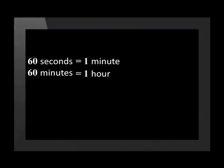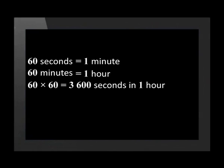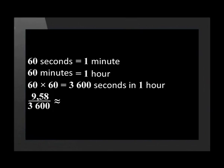Now let's convert 9.58 seconds to hours. There are 60 seconds in a minute and 60 minutes in an hour, which means there are 3600 seconds in an hour. To convert 9.58 seconds into hours, we must divide by 3600. 9.58 seconds equals 0.00266 hours, rounded off to 5 decimal places.